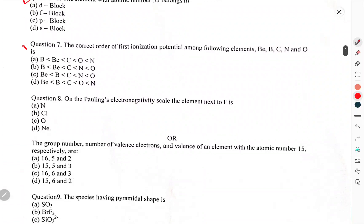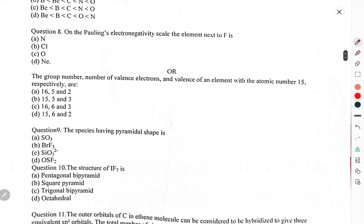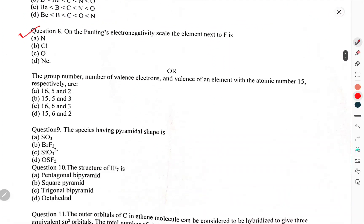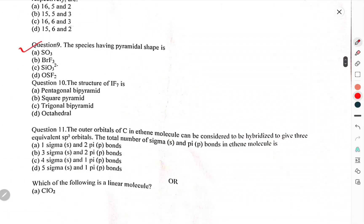The element with atomic number 35 belongs to? Question 7: The correct order of first ionization potential among the elements beryllium, boron, carbon, nitrogen, oxygen is? Question 8: On the Pauling's electronegativity scale the element next to F is? The group number, number of valence electrons, and valence of an element with atomic number 15 respectively are? Question 9: The species having pyramidal shape is?